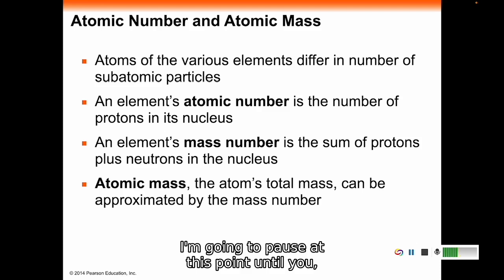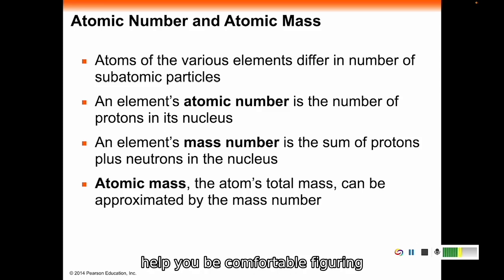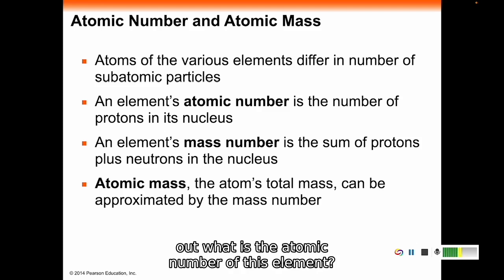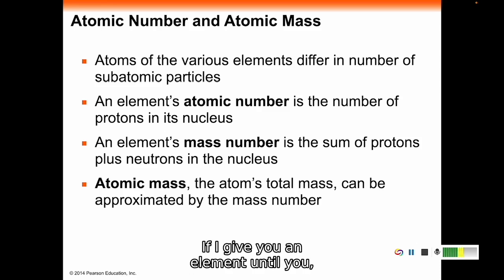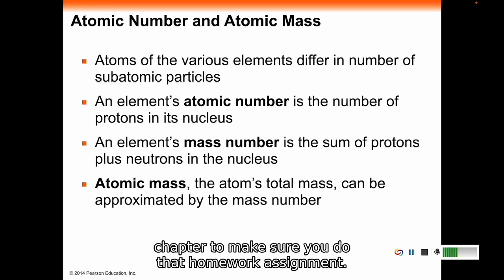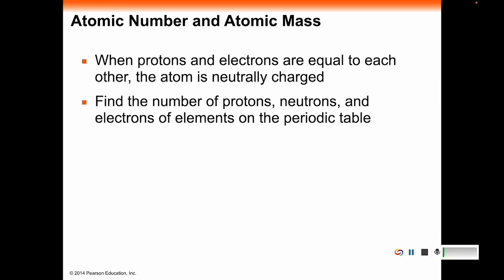I am going to pause at this point and tell you there is a worksheet that I have on D2L to help you be comfortable figuring out what is the atomic number of this element, the mass number, the atomic mass. You need to be comfortable calculating these numbers. If I give you an element and tell you how many protons, neutrons, and electrons it has, you need to be able to figure out its atomic number and atomic mass. That is a homework assignment you need to complete and bring to class for us to go over. If you have missed class when we're talking about chapter two, make sure you do that homework assignment.